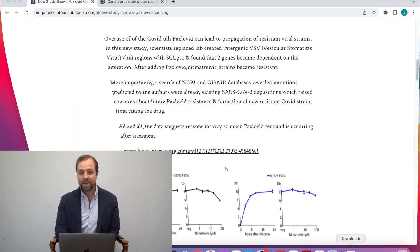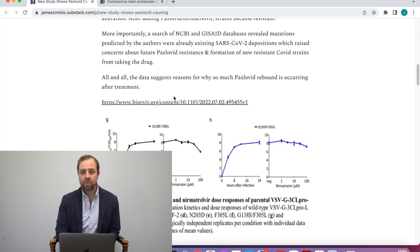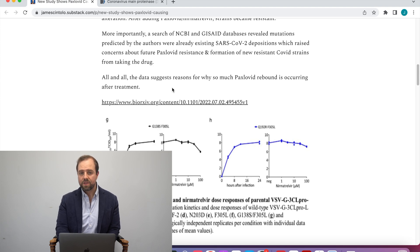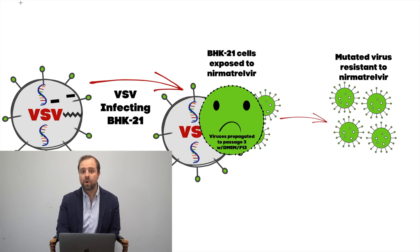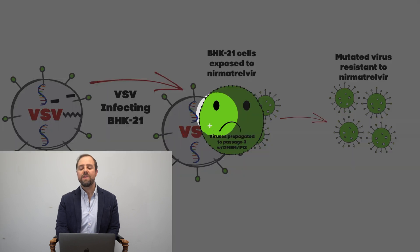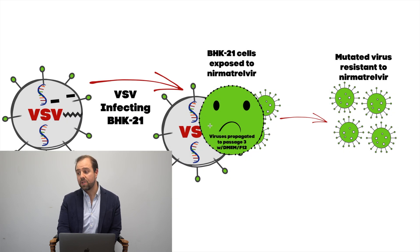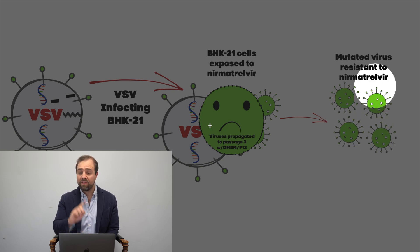Now let me scroll down and explain this study in a little more detail. That special VSV virus with the SARS-CoV-2 part — 3CL Pro or M-Pro — added by scientists was then introduced to other cells called BHK-21 cells. That SARS-CoV-2-like virus, when exposed to those BHK-21 cells, would enter, infect, and replicate inside, then spit out new viral progeny. The main ingredient of Paxlivid, called Nermotrelivir, was added to the mix to see if it could create resistant mutants.